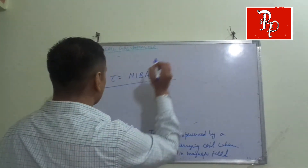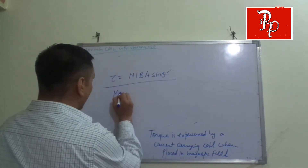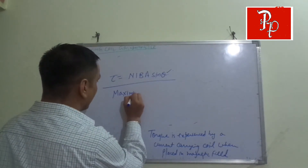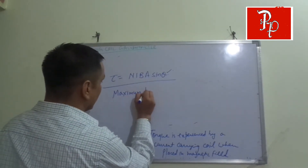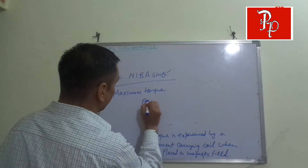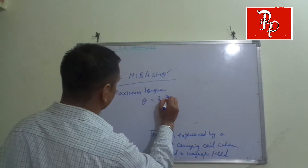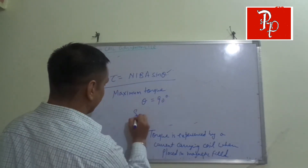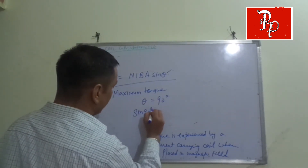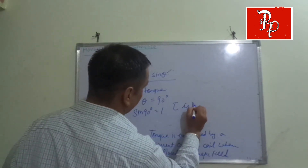To get maximum torque, the angle θ should be 90 degrees, so that sin 90 equals 1, and therefore the torque is maximum.